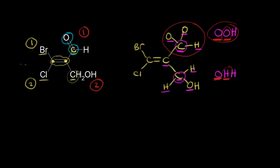We draw a line for our double bond and look at our two higher priority groups — they are on the same side. So this is the Z configuration for our double bond.